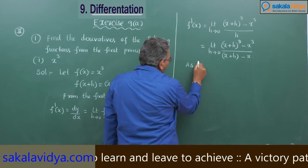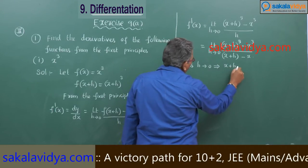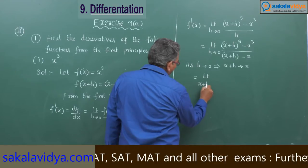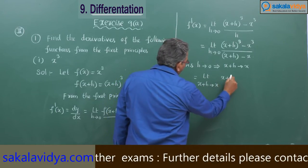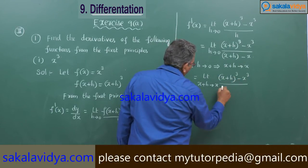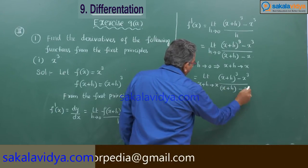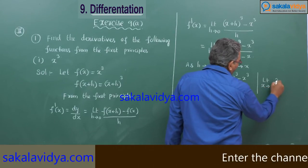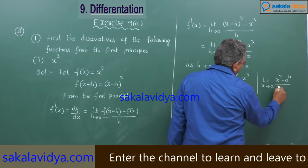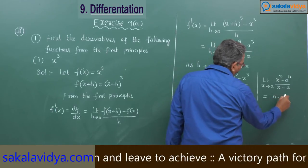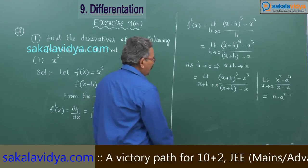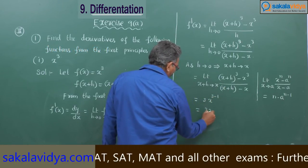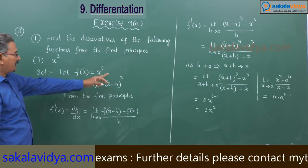As h approaches 0, x+h approaches x. So this can be written as limit (x+h) tends to x of [(x+h) whole cube minus x cube] by [(x+h) minus x]. Observe how it appears — it is in the form of the standard limit: limit x tends to a of [x to the power n minus a to the power n] by [x minus a] = n into a to the power n minus 1. Here n equals 3 and a equals x, giving 3 times x to the power 3 minus 1, which equals 3x square. That means the derivative of x cube with respect to x is 3x square.